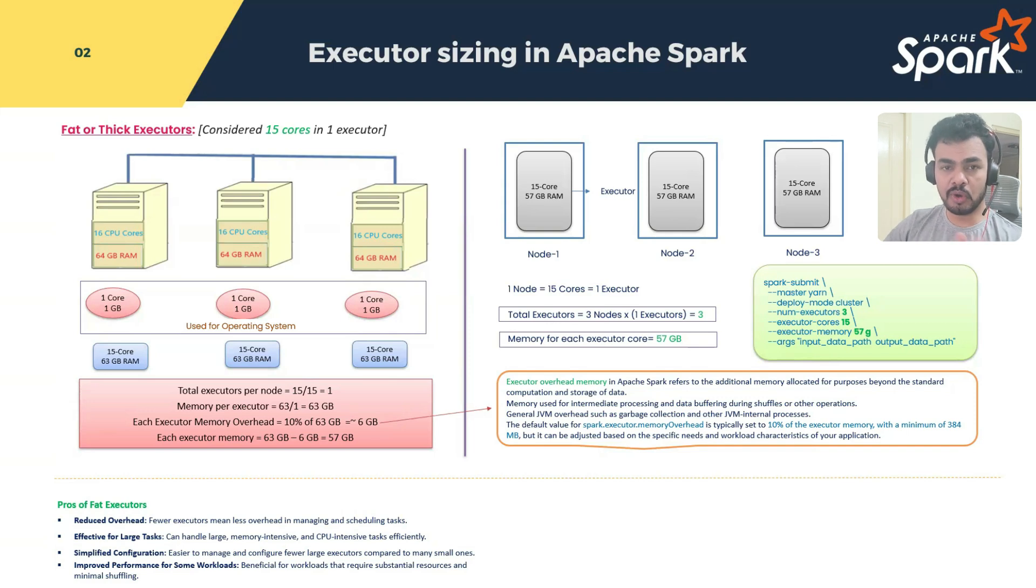If you feel that there is a lot of shuffling which happens inside the data based on the program that you are going to run, and if your partition size is huge, if you don't want to make too much network consumption or network traffic, in that case you can go with thick executors. Simplified configuration - easier to manage and configure few large executors compared to many small ones. As I told, maintenance is very easy. Improved performance for some workloads, not all, for some beneficial for workloads that require substantial resources and minimal shuffling. If you have only one executor per node, data locality will give you more advantage, because you no need to get the data from different executors or different machines. All executors, 15 executors are inside the single machine, so there is very less chance of bringing data from one machine to another machine. And the shuffling will be reduced in this case.